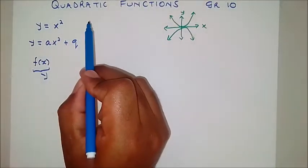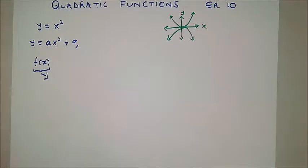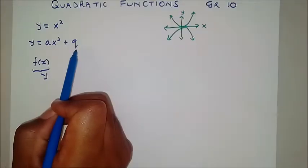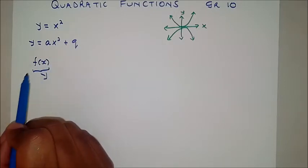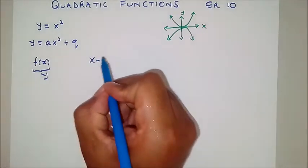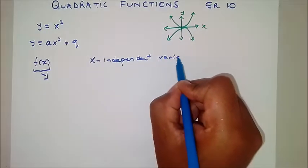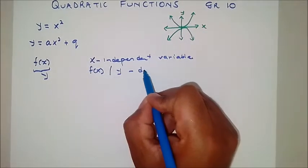They are called quadratic functions because the highest power of x in the equation is 2. The general or standard form that you might see, especially in Grade 10, is y = ax² + q. Sometimes you might see f(x), g(x), or h(x) — just take f(x) as y, because f(x) enables you to appreciate that x is the independent variable.